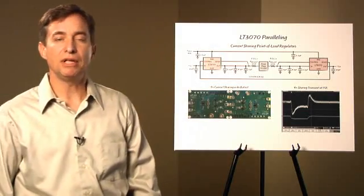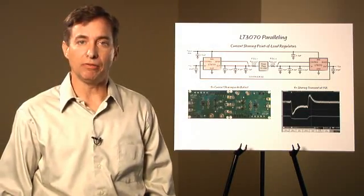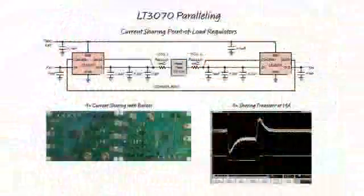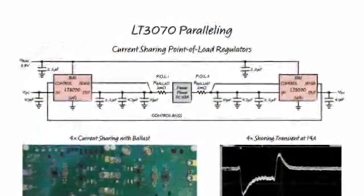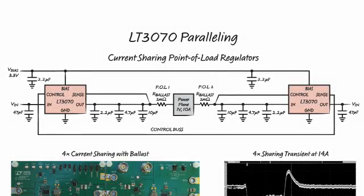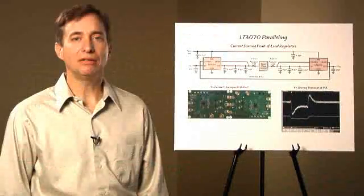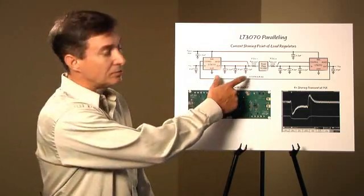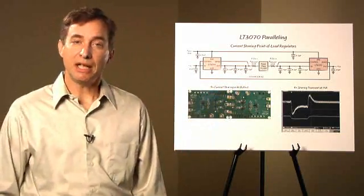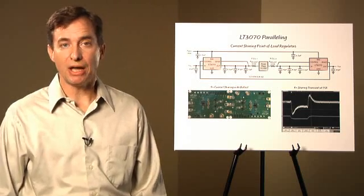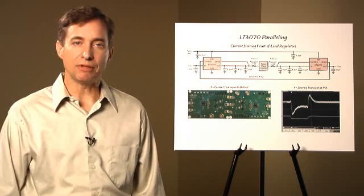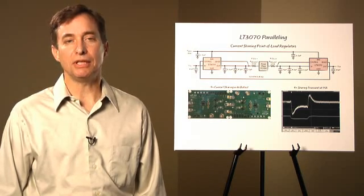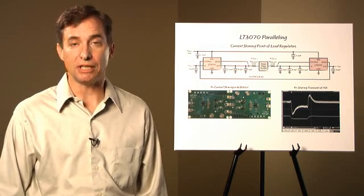The LT3070 and LT3071 also parallel very well. This top diagram illustrates two LT3070s sharing a 10 amp load. Ballast resistors are used to equalize the current sharing between regulators. We recommend clusters of smaller ceramic caps for better transient response and lower cost. If your existing application includes distributed bulk caps, that's okay. They do not hinder the performance of the LT3070, but they do not offer any significant benefit. Please refer to the LT3070 datasheet for more details on this.